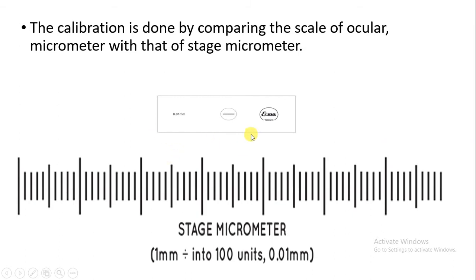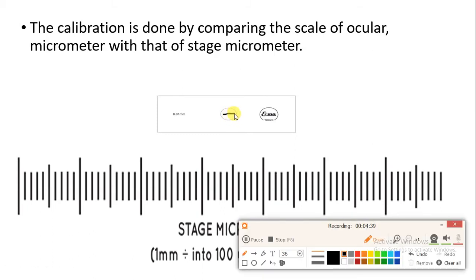The next one is the stage micrometer. You can see it is a slide — it is always kept on the stage. Inside, you can see a line with divisions present — it is called a stage micrometer with an accurate, calibrated scale. The length present on it is in millimeters. The total length you will see is 1 mm, and this 1 mm length is also divided. There are about 100 divisions present. So, 1 upon 100 is equal to 0.01 mm.